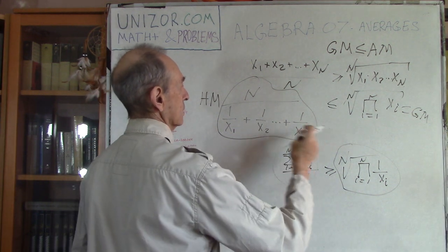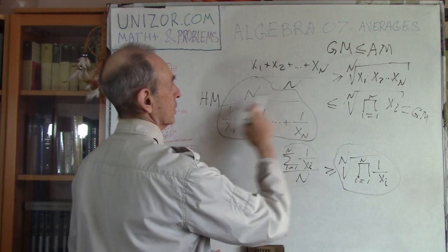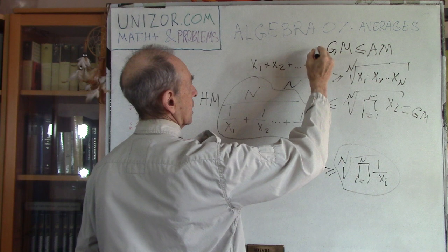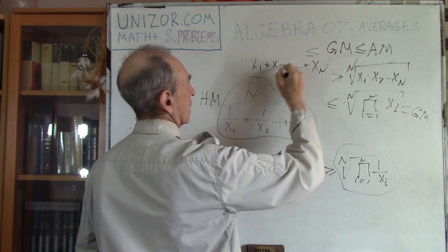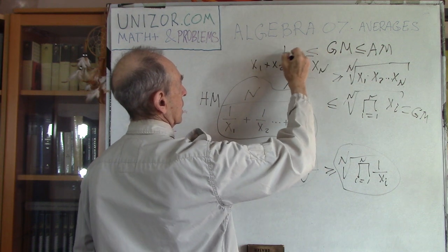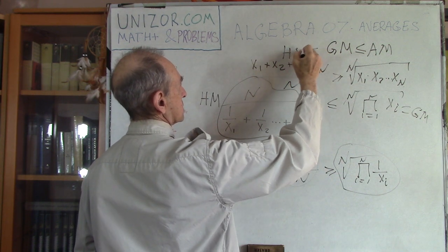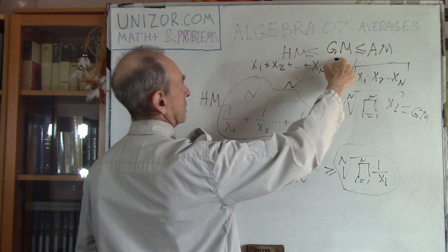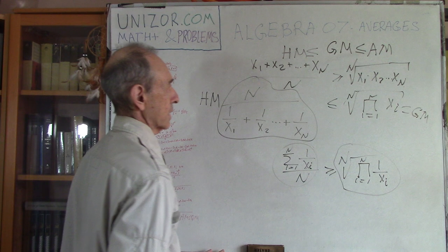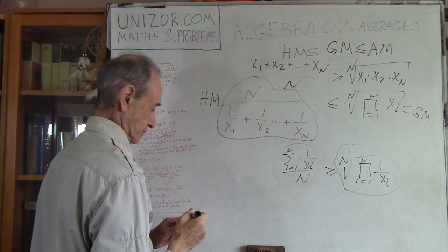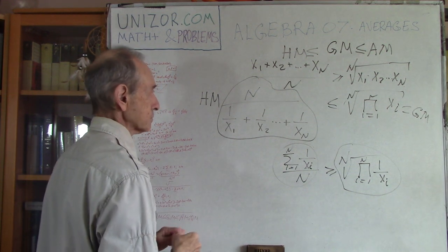So, to prove that harmonic mean ≤ geometric mean is very simple: you just apply the arithmetic-geometric mean inequality to the inverted values, and that's it. As a result, harmonic mean is less than or equal to geometric mean.